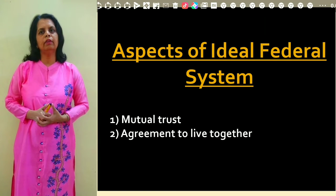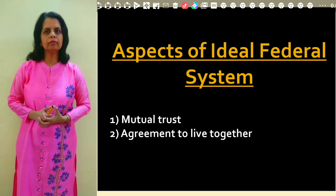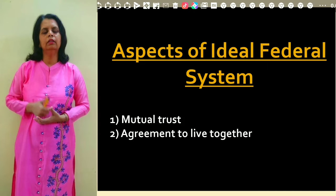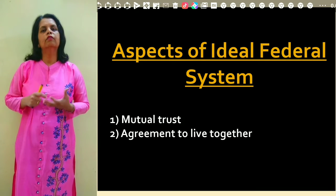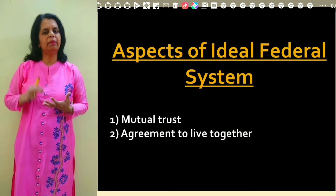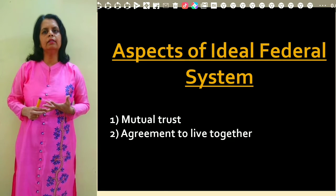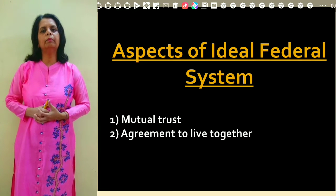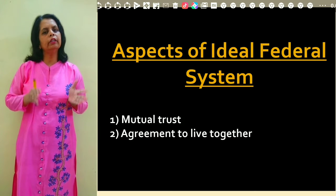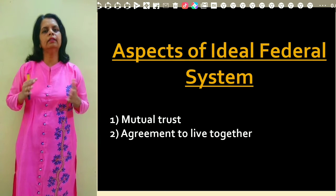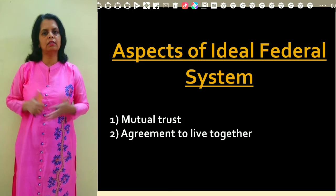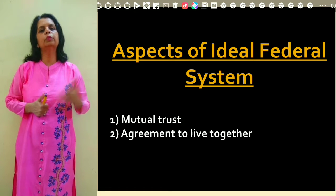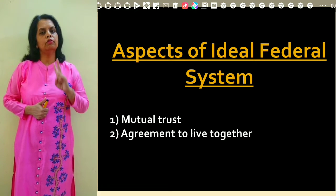When we talk about the types of federation, the ideal federal system is the one based on two aspects. First, it should be based on mutual trust, and the second is agreement to live together. These two are the important aspects of federalism, from which the different types of federation are formed.